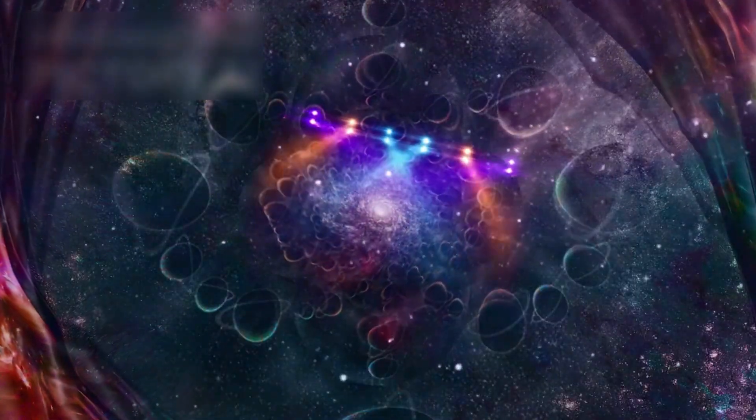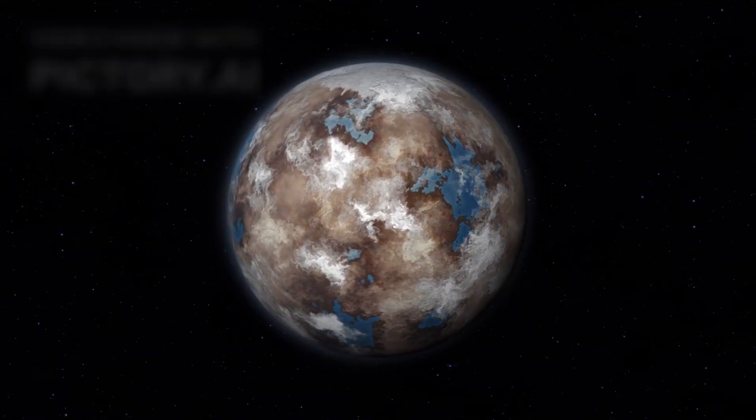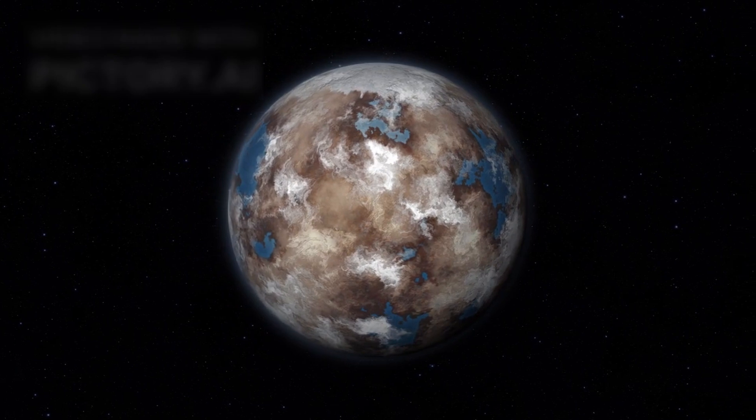The source? Proxima Centauri b, the closest known exoplanet to our solar system. What the telescope recorded were mysterious bright flashes emanating from the planet's dark side, sparking excitement among astronomers and deepening the conversation around the possibility of extraterrestrial civilizations.